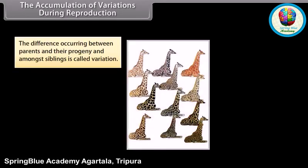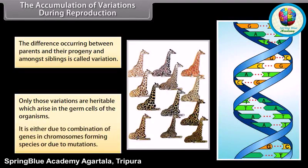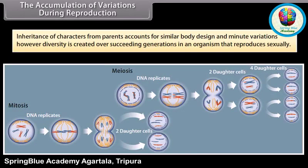The accumulation of variations during reproduction. The difference occurring between parents and their progeny and amongst siblings is called variation. Only those variations are heritable which arise in the germ cells of the organisms. It is either due to combination of genes in chromosomes, forming species, or due to mutations. Inheritance of characters from parents accounts for similar body design and minute variations. However, diversity is created over succeeding generations in an organism that reproduces sexually.